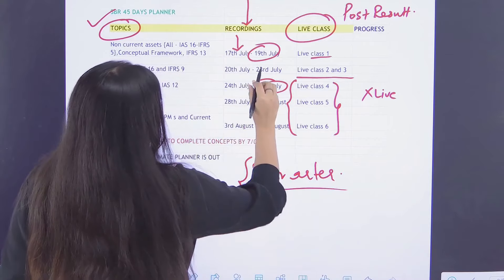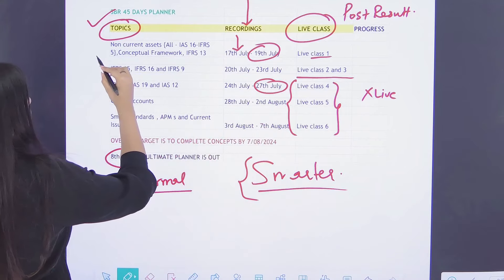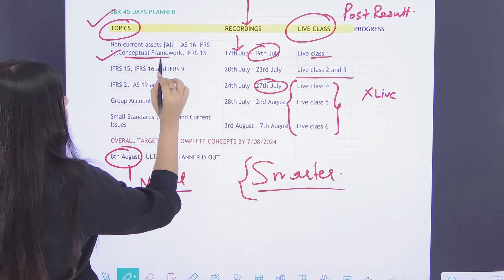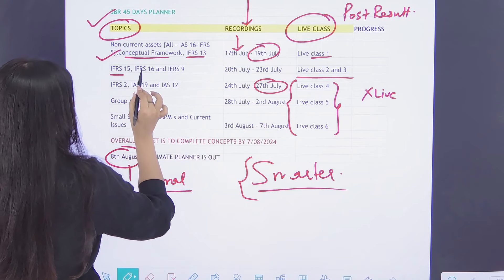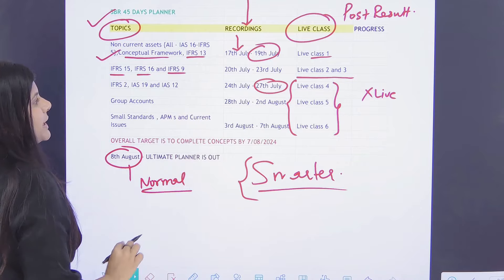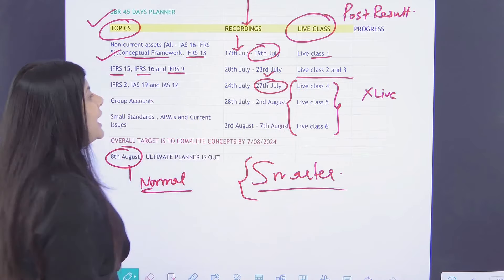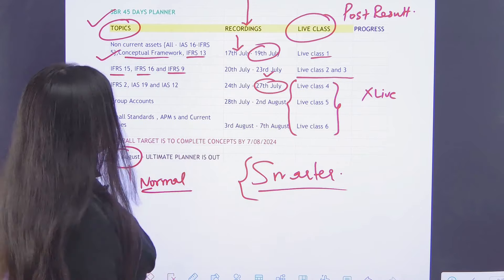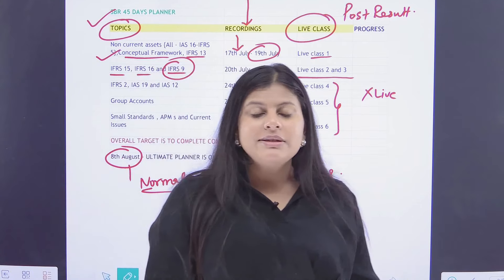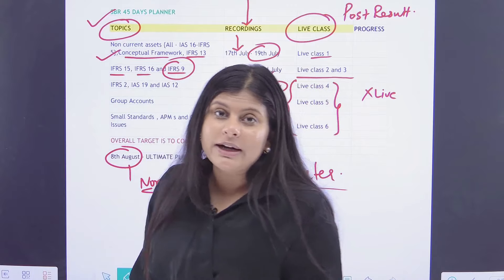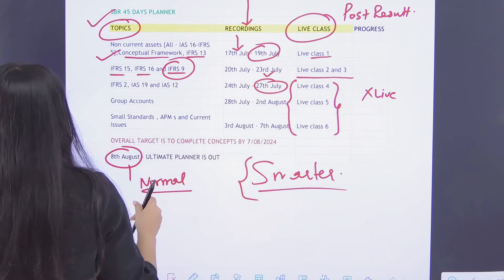From 17th to 19th July, you will cover the non-current assets including conceptual framework IFRS 13. Then IFRS 15 revenue, leases, financial instruments, cover it till 23rd July. So you have four days for that. IFRS 9 is the most difficult standard in the whole syllabus. So that has to be covered in four days as well. If you are a paid student, watch the recordings of these sessions at 1.5 times the speed.